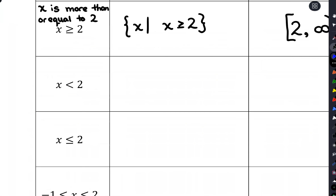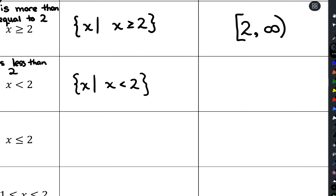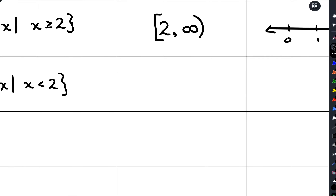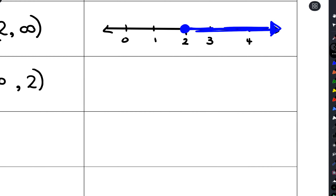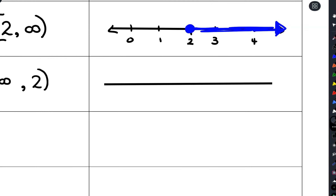Now we have x is less than two. In set builder notation we copy that down similarly. For interval notation, x can be anything smaller than two, so two is our largest value and our smallest is negative infinity. We always use parentheses with negative infinity, and parentheses at two since we're not including it. On the graph we go to the left-hand side with an open circle at two because we don't have the equals.